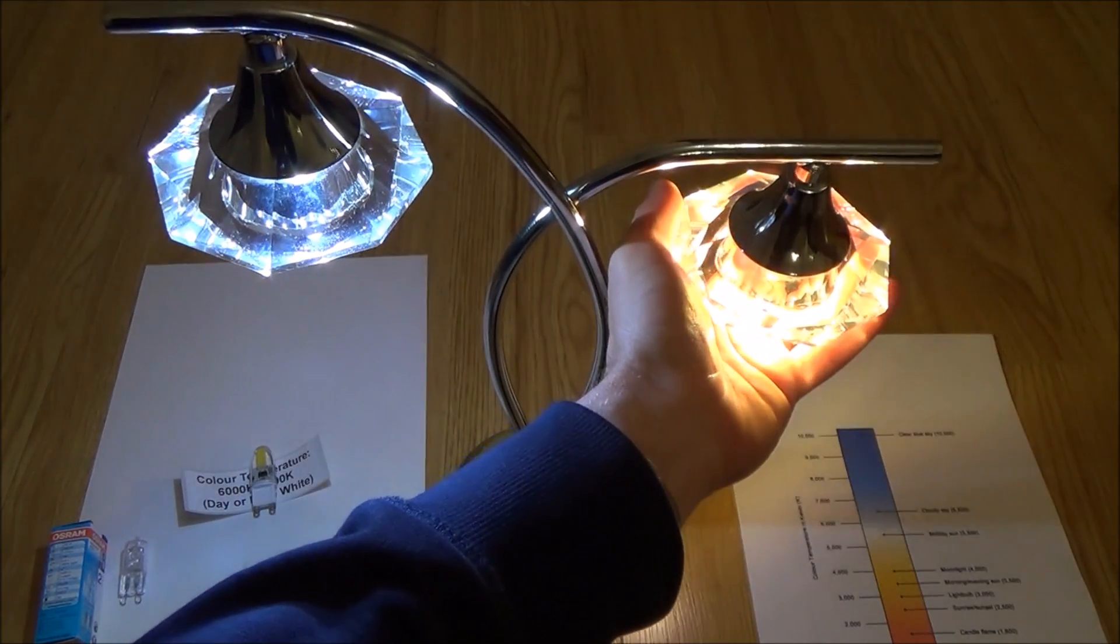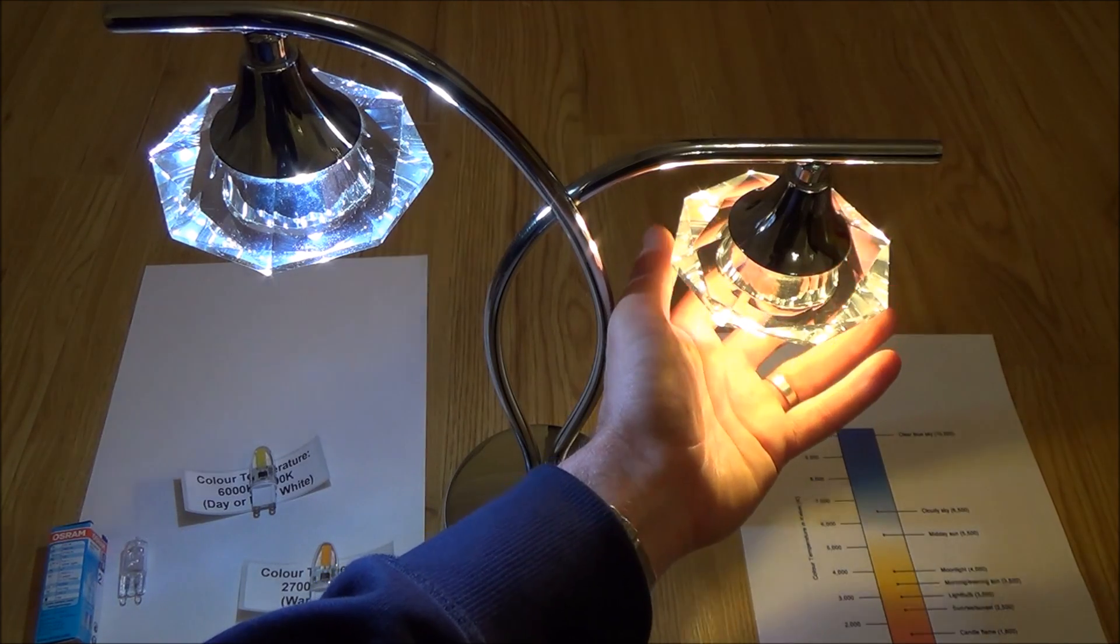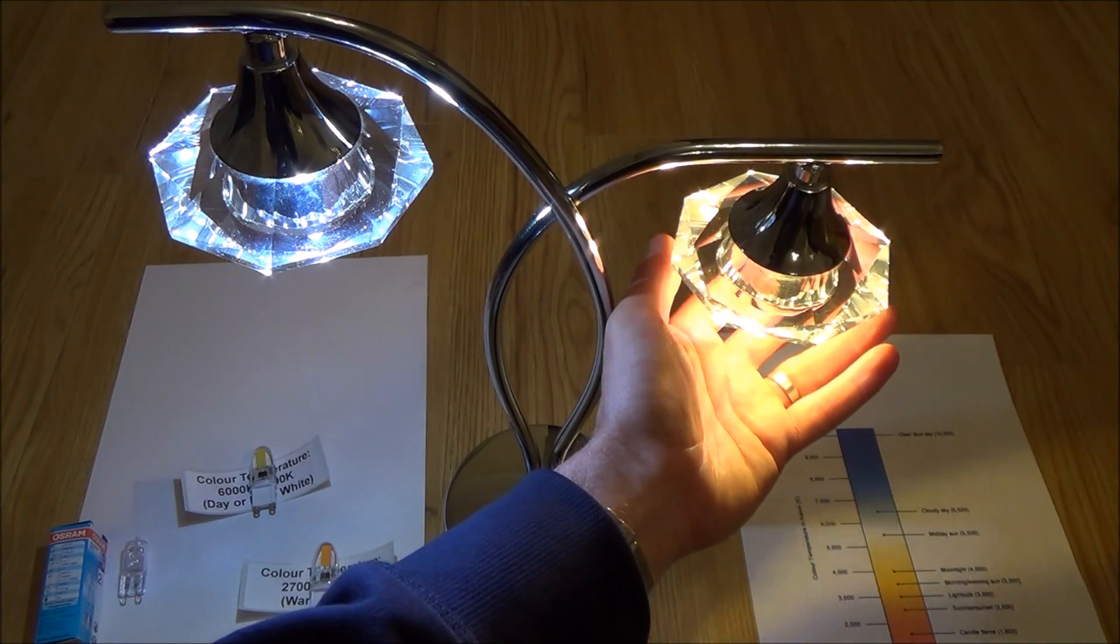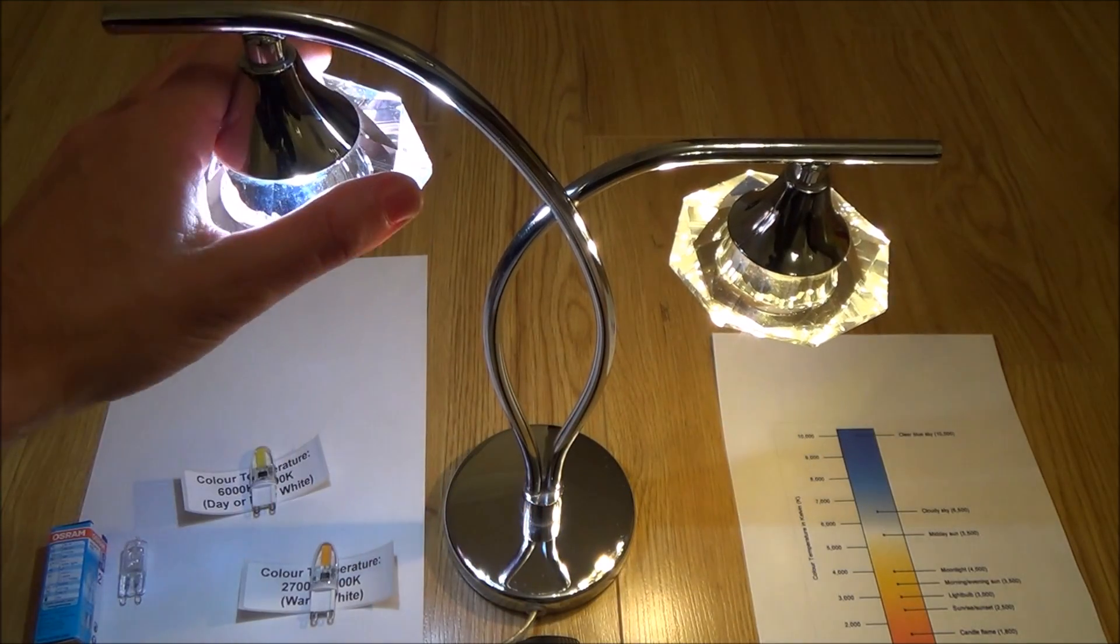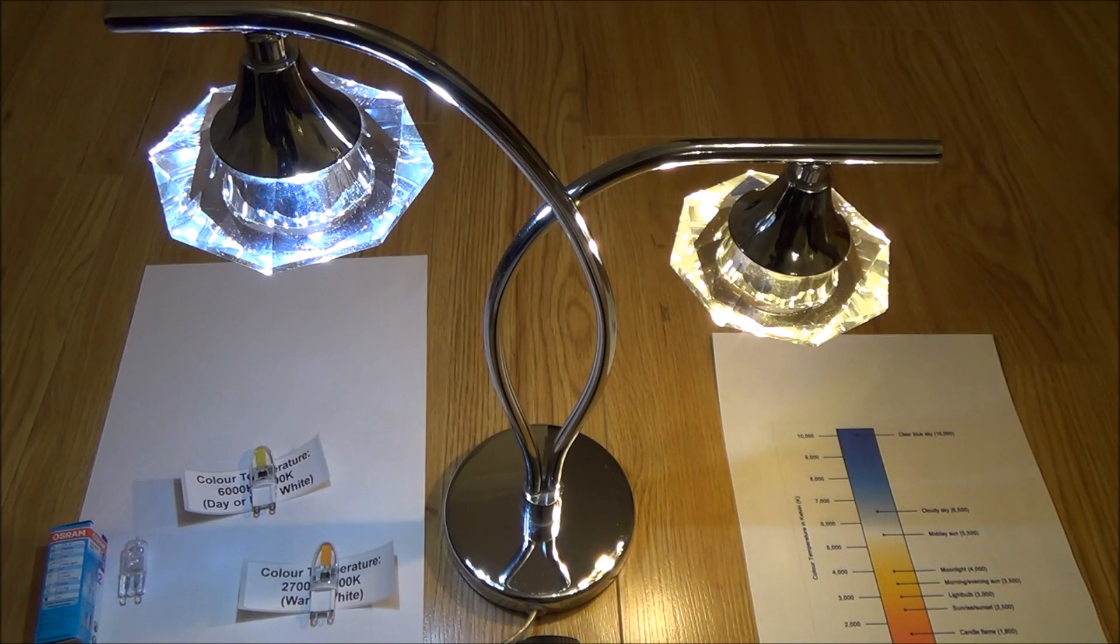Now a long time ago we didn't have to worry about this because most lights in your house were incandescent and they used to glow red hot and give off this yellow type of light. But nowadays with the LED lights they're not glowing red hot anymore, so the color is manufactured and you can choose.